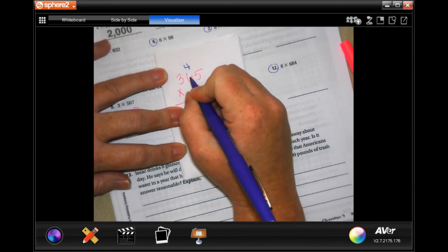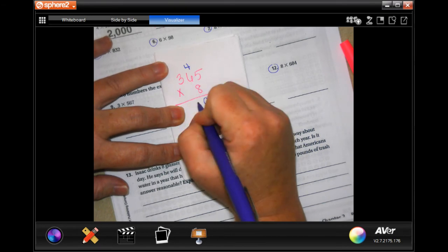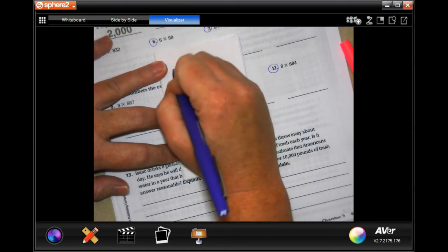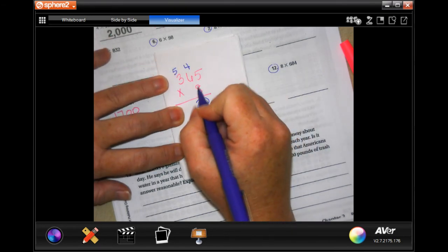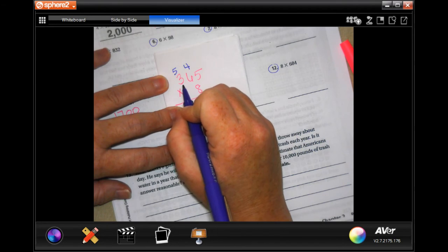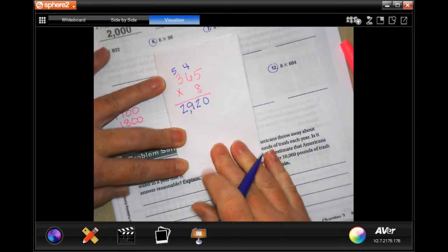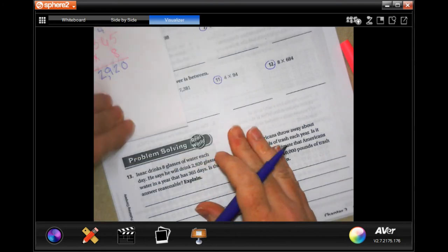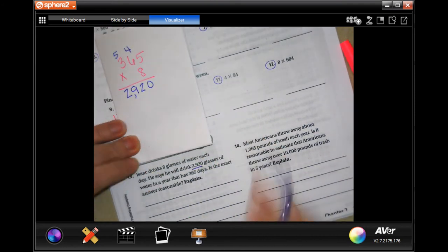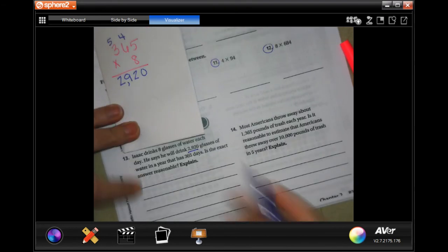Eight times six is 48, plus four more is going to be 52. Carry your five. Eight times three is 24, plus five is 29. So 2,920, two thousand nine hundred and twenty. The exact answer reasonable? Yes.